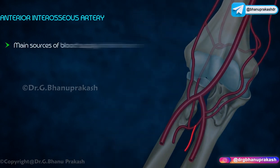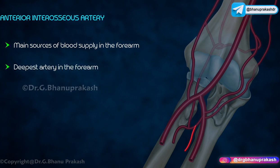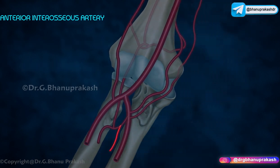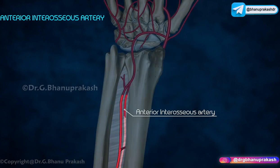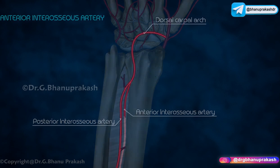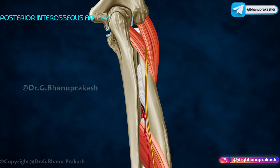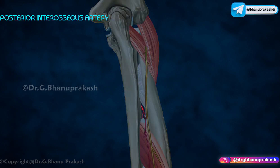The anterior interosseous artery is one of the main sources of blood supply in the forearm and is the deepest artery in the forearm. It arises from the common interosseous artery, anastomoses with the posterior interosseous artery, and joins in the formation of the dorsal carpal arch.